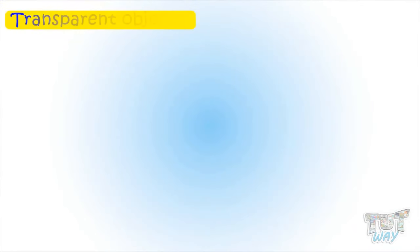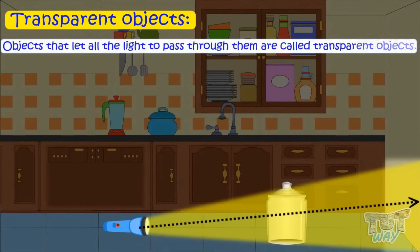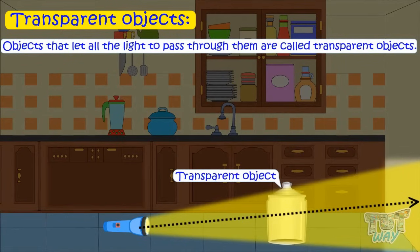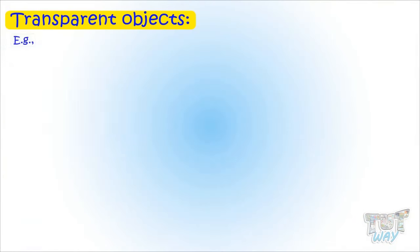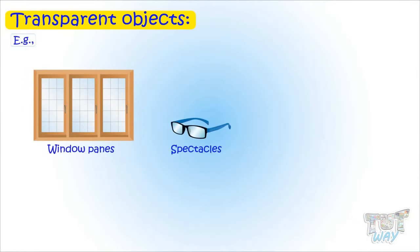Transparent objects. Objects that let all the light to pass through them are called transparent objects or clear objects, like any clear glass or clear plastic. Examples: window panes, spectacles,